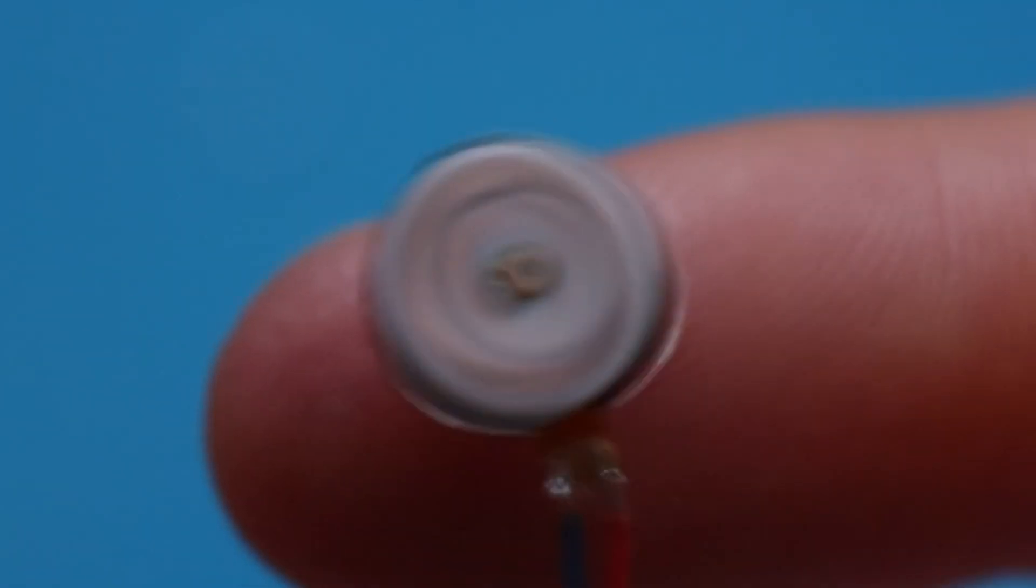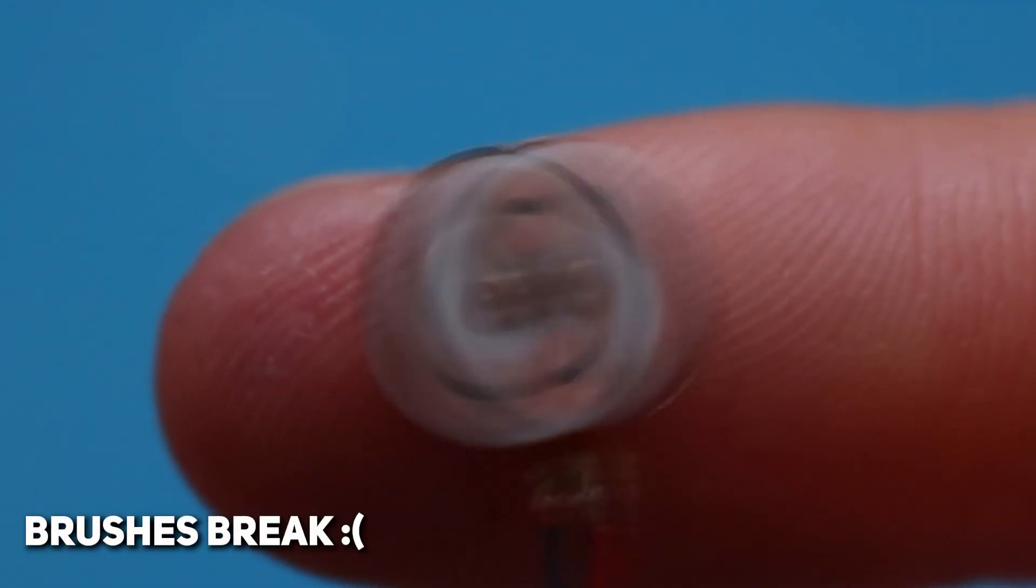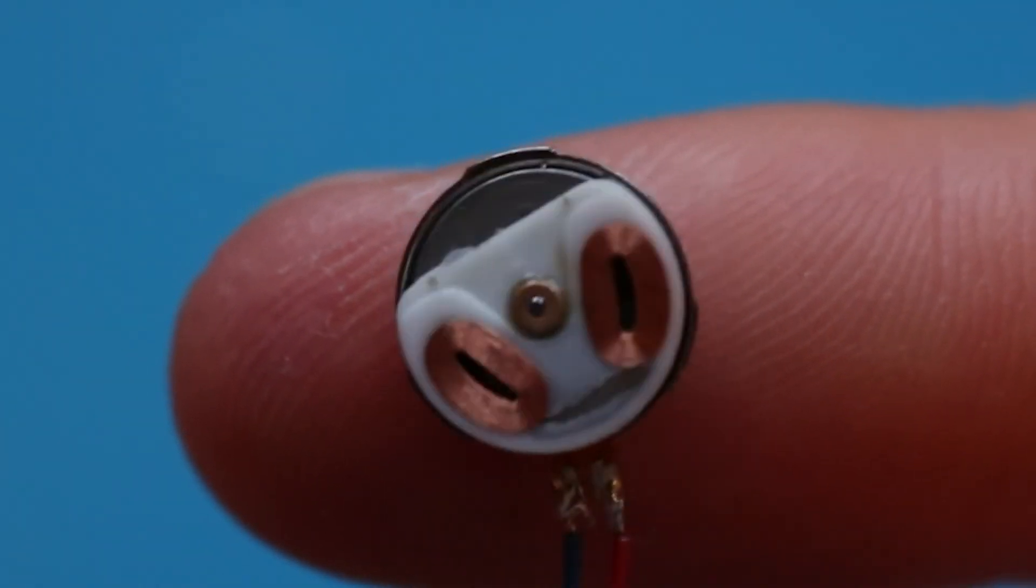That is the working principle of a DC motor with brushes. I believe that is the simplest and cheapest type of motor that can be used, but not very reliable because of the brushes. If you still don't understand how it works, you can rewatch the explanation part again.